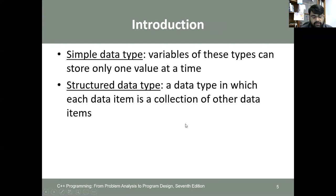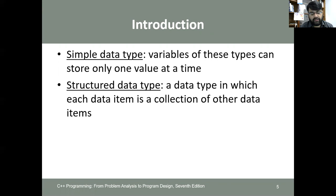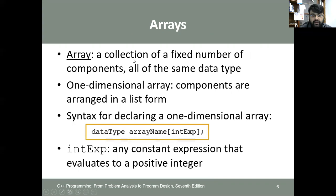A simple data type is a variable that can store only one value at a time. However, structured data types are data types in which each data item is a collection of other data items — one item can have multiple values by accessing sub-items. An array is a collection of a fixed number of components, all of the same data type.